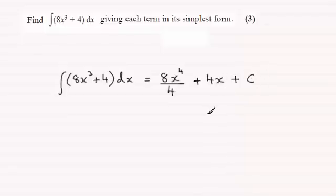We just need to tidy this up and I can see that 8 can be divided by 4, so that goes twice. So you've got 2x to the power 4 plus the 4x, and then plus the constant of integration C. And that's it.